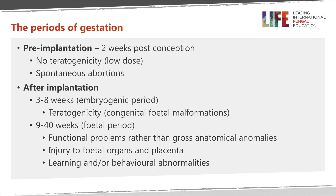Looking at the different periods of gestation: the first two weeks, the pre-implantation period from conception to just before implantation in the endometrial lining — if a mother takes antifungal drugs during that period, there will probably be no teratogenicity, but you can get miscarriage or spontaneous abortion. After implantation, especially in the first eight weeks — the period of embryogenesis — most of the fetal parts are being formed, and this is the most critical period for congenital malformations. In the second and third trimester, you generally will not get anatomical malformations but rather problems with functionality, injuries to fetal organs like the ears and liver, and possibly learning or behavioral abnormalities.